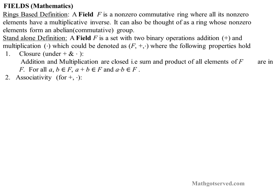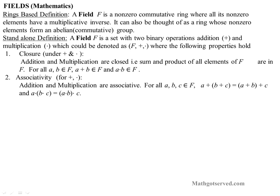Condition number two is associativity. The associative property applies to both addition and multiplication — and that's the same with rings also. So addition and multiplication are associative, as illustrated here. For all elements — let's say three elements A, B, C in a set F — if F is a field, then the associativity property holds for both addition and multiplication.